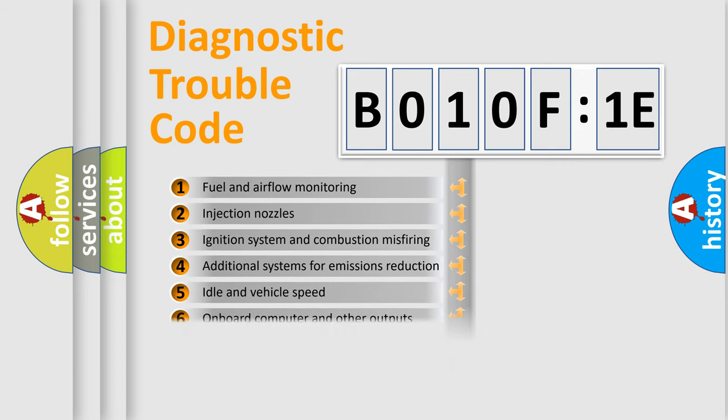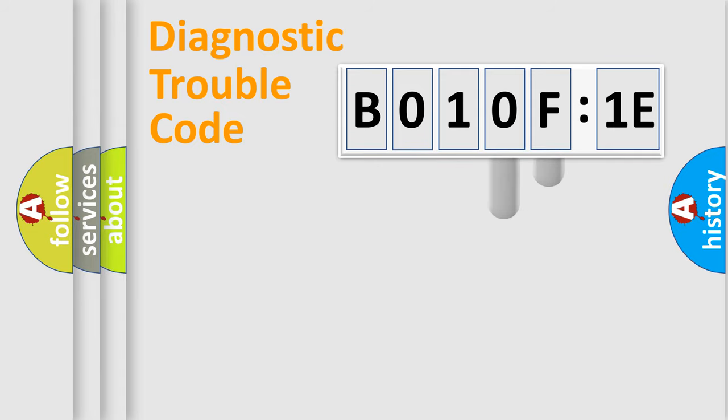The distribution shown is valid only for the standardized DTC code. Only the last two characters define the specific fault of the group.